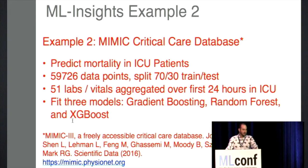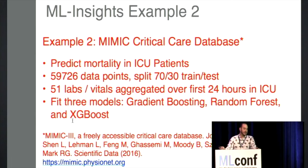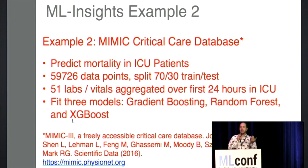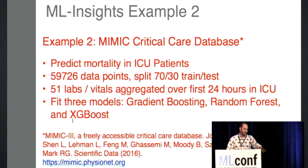In the second example — a medical one — I'm predicting mortality in ICU patients. I used the MIMIC critical care database, which is a really great database if you're interested in medical applications. I built a dataset of 59,000 patients, split 70/30 train and test, and took 51 different labs and vital signs aggregated over the first 24 hours in the ICU. When I say 51, it's slightly an exaggeration because since I'm aggregating over 24 hours, you have things like the minimum and maximum blood pressure, minimum and maximum respiration rate, and so forth. But I fit a few different models, and this is a classification problem: predicting the probability of a person dying in the ICU.